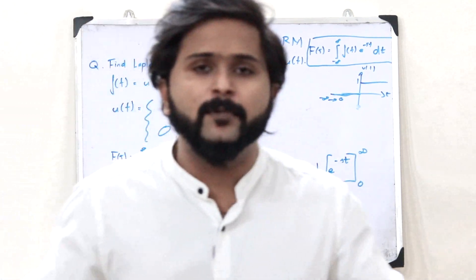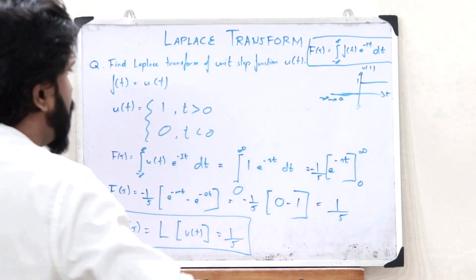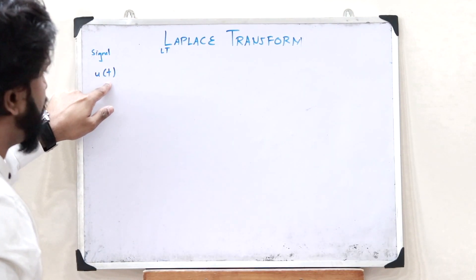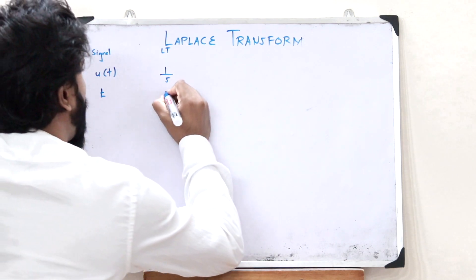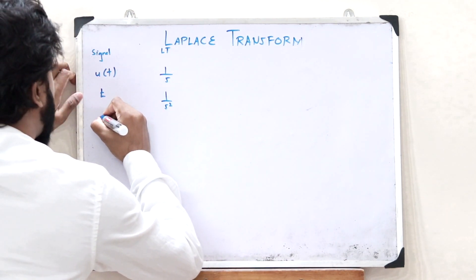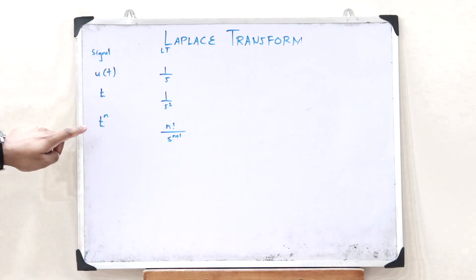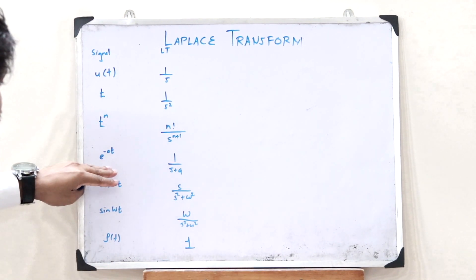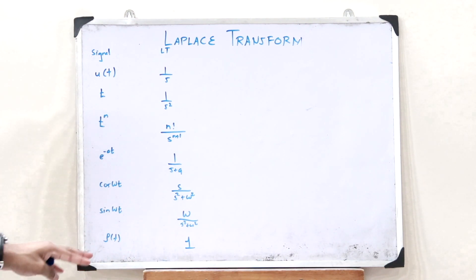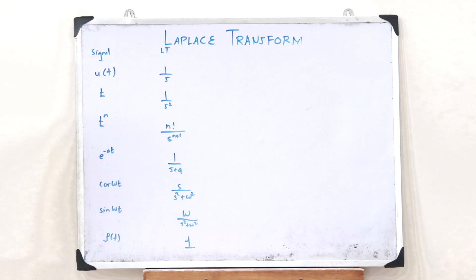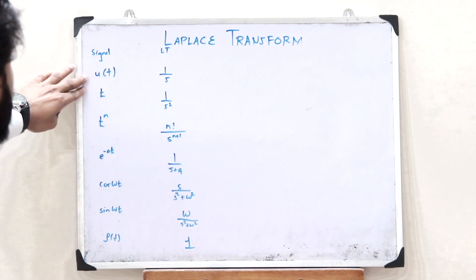Now I will write down the Laplace Transforms of standard functions. The Laplace Transform of U of t, the unit step function, is 1 by S. The Laplace Transform of t is 1 by S squared. The Laplace Transform of t raised to n is n factorial divided by S raised to n plus 1. The Laplace Transform of e raised to minus a t is 1 by S plus a. The Laplace Transform of cosine omega t is S divided by S squared plus omega squared. The Laplace Transform of sine omega t is omega divided by S squared plus omega squared. The Laplace Transform of an impulse signal is 1.